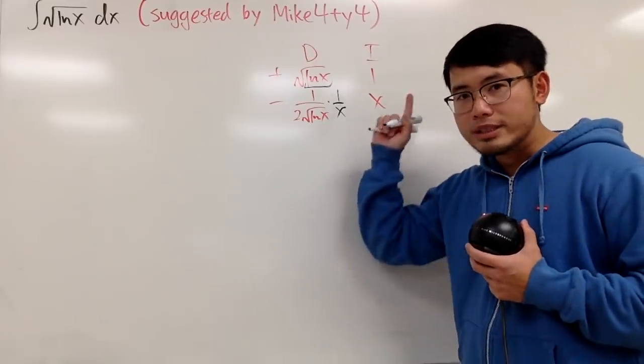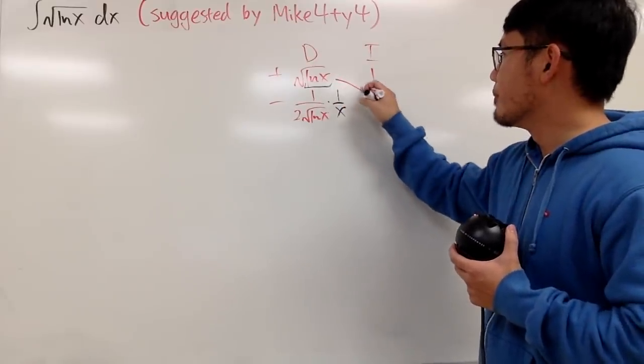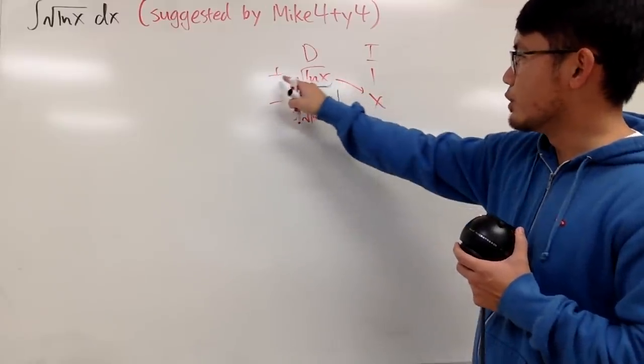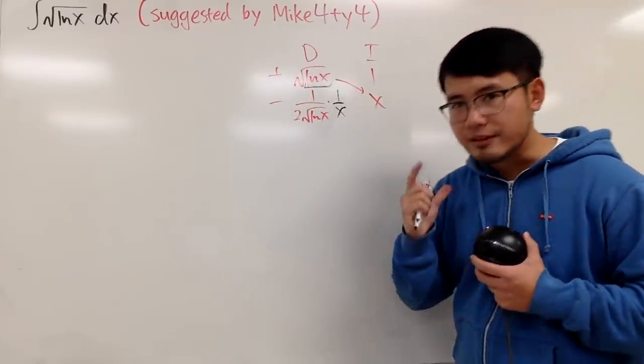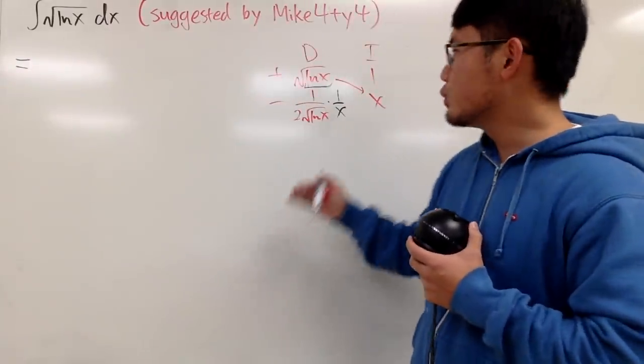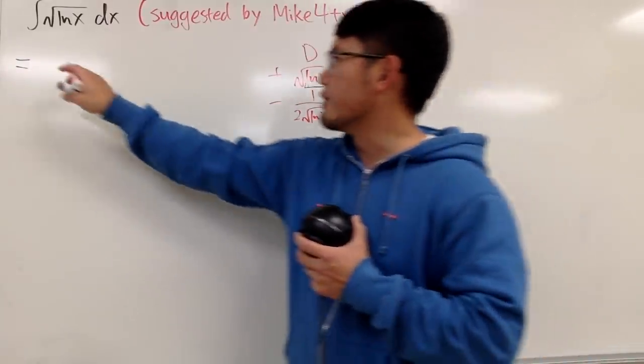So now, with this being done, we actually know the first part of the answer. When you do this, when you multiply this, this, and that, that's the first part of the answer. So let's write it down. First, we'll have positive x times the square root of natural log of x. So that's very nice.